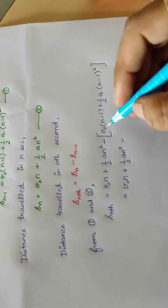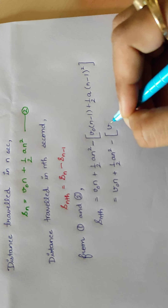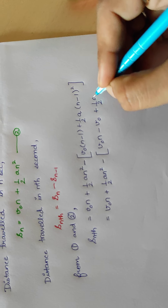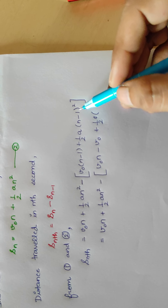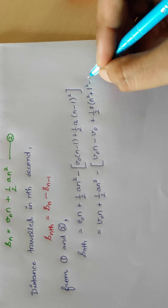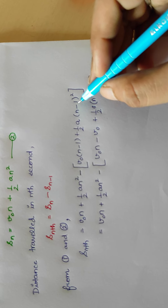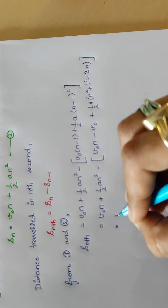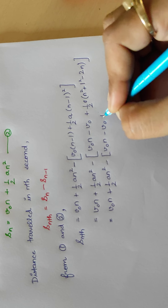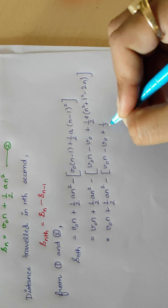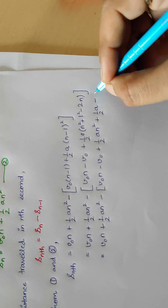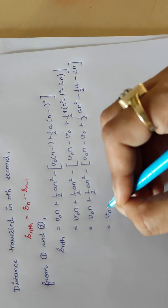We solve this equation. We keep v₀n plus half An squared as is. Then, expanding the bracket: v₀ times (n minus 1) gives v₀n minus v₀. For the squared term, (n minus 1)² equals n² plus 1 minus 2n using the identity (A minus B)² equals A² plus B² minus 2AB, where A is n and B is 1. Multiplying through by half A gives one-half An² plus one-half A minus An.